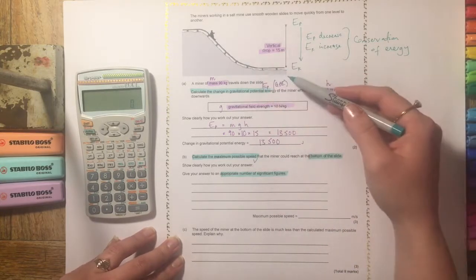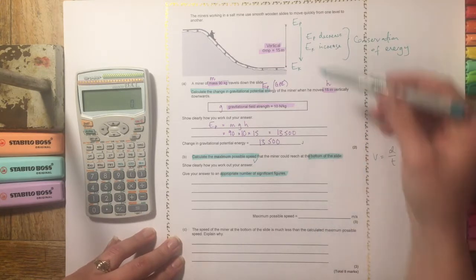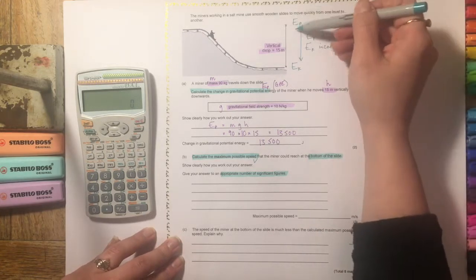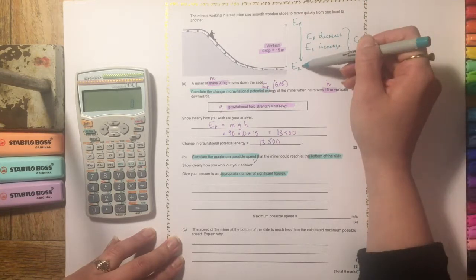These sorts of questions where you're asked to work out gravitational potential energy and then it expects you to put together that the potential energy store is going to decrease and the kinetic energy store is going to increase.